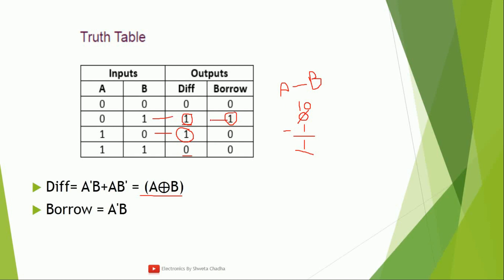Similarly for borrow, there is only one entry in the truth table where borrow is one — that is the row zero, one. Hence borrow equals A̅·B. Now let us draw the logic circuit diagram for the half subtractor.